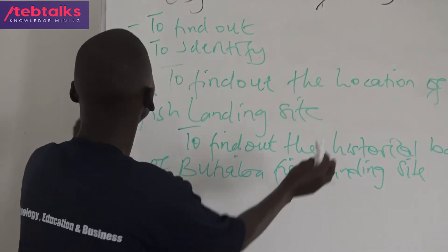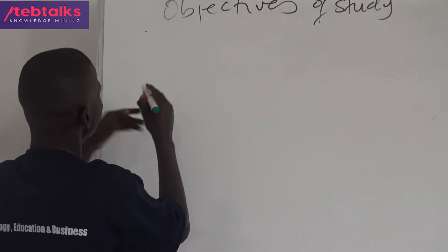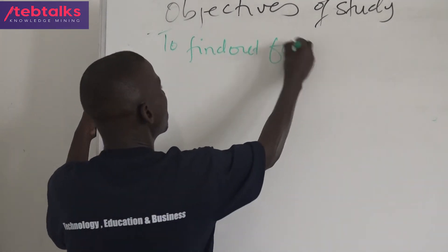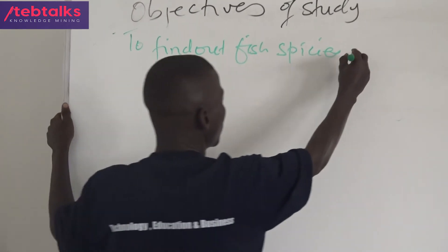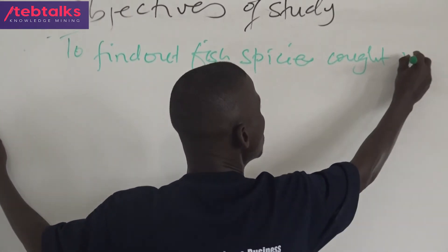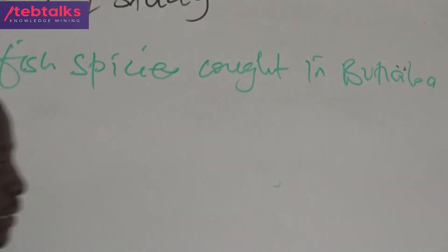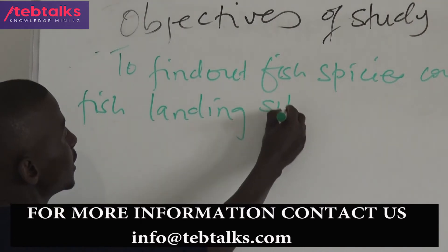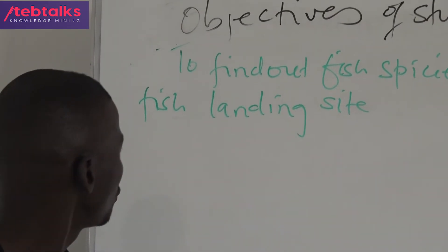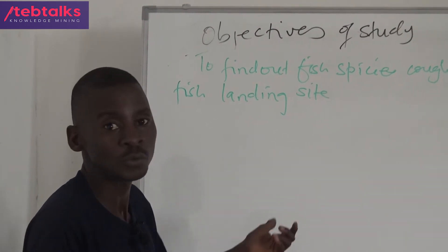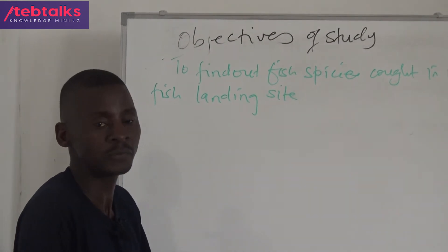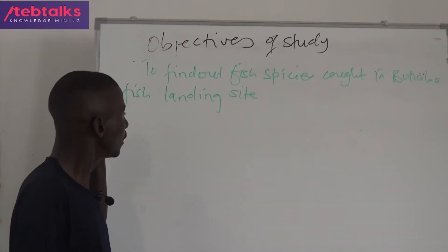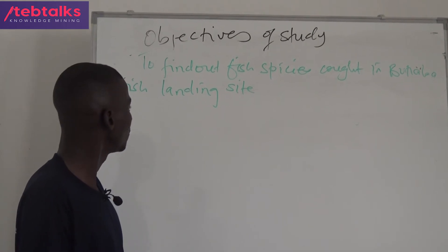The third objective is to find out fish species. Fish species are relevant when you have a fish landing site. Since our fieldwork is going to be carried out at a landing site where fishing activities are expected, our main objective is to know the fish species found at the Java fish landing site.